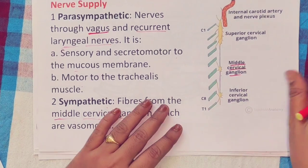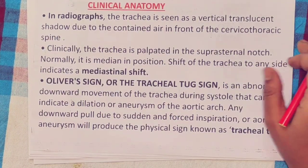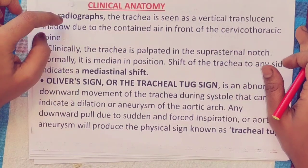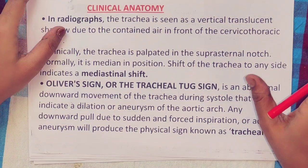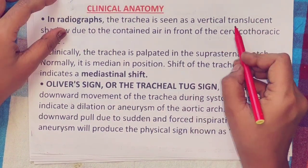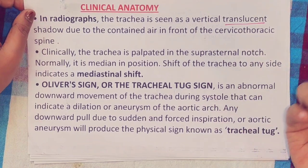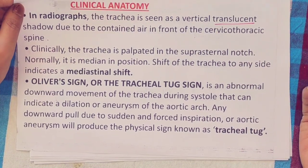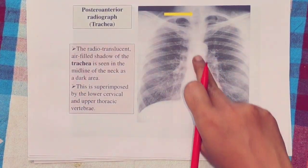Clinical anatomy: on radiographs, the trachea is translucent, meaning it allows X-rays to pass through, so it can be identified on a chest X-ray.